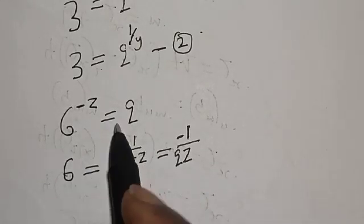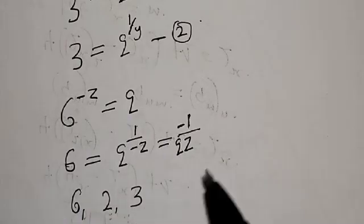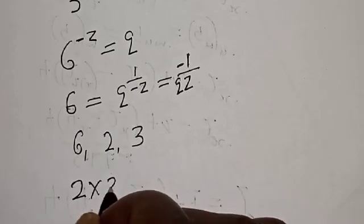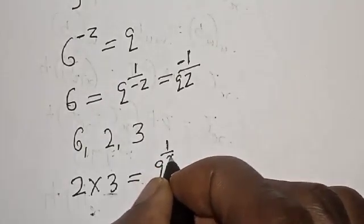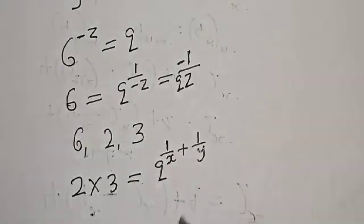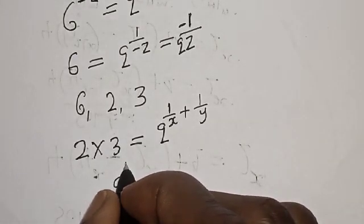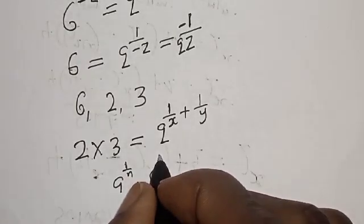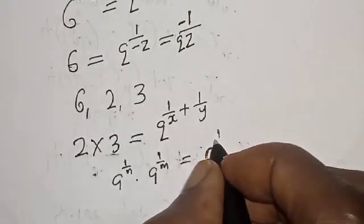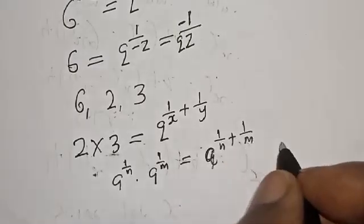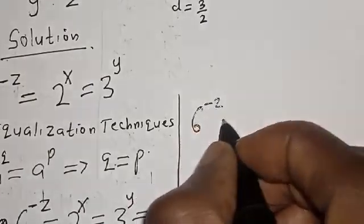Now we can see that 6, 2, and 3 are free for combination. Since 6 equals 2 times 3, we have Q raised to power minus 1 over z is equal to Q raised to power 1 over s multiplied by Q raised to power 1 over y, which equals Q raised to power 1 over s plus 1 over y. This uses the rule: A raised to power 1 over N multiplied by A raised to power 1 over M equals A raised to power 1 over N plus 1 over M.